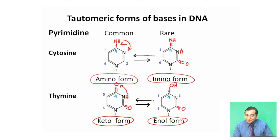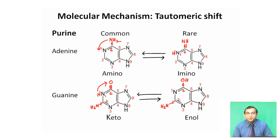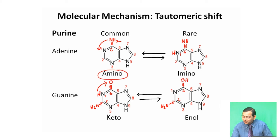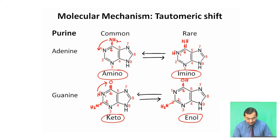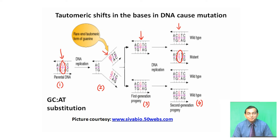Next come the tautomeric shifts in purine bases — adenine and guanine. In the case of adenine, the amino form changes to the imino form, where hydrogen atoms move from the sixth position to the first position of the base. Similarly, in the case of guanine, the keto form changes to the less stable enol form, where hydrogen atoms move from the first position to the sixth position. As a result of this shifting of hydrogen atoms from one position of the base to another, mutation occurs.